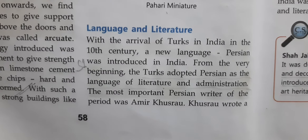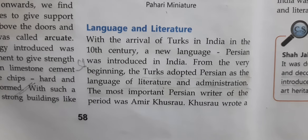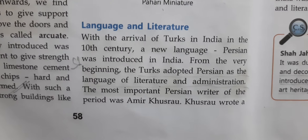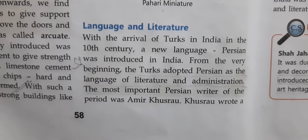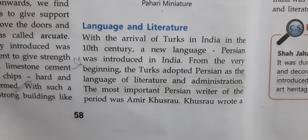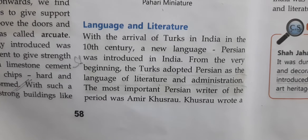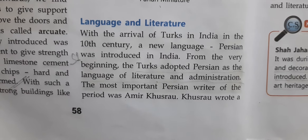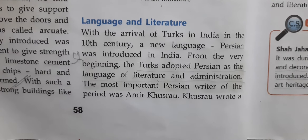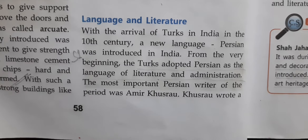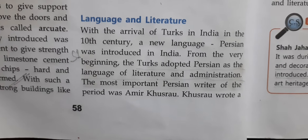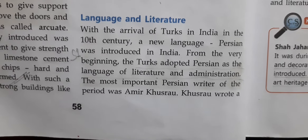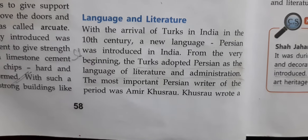Next is language and literature. With the arrival of Turks in India in the 10th century, a new language, Persian, was introduced in India. From the very beginning, the Turks adopted Persian as the language of literature and administration. The most important Persian writer of the period was Amir Khusro.